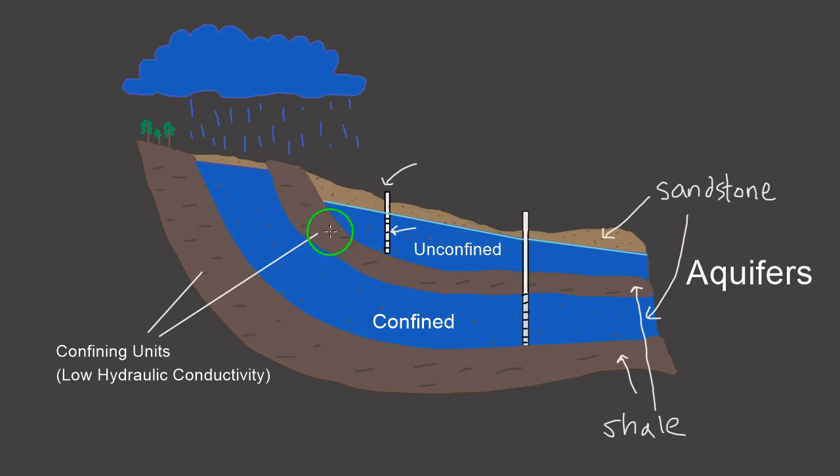So if we stick an instrument down this well and measure the water table right there, that will be exactly where the water level, the water table is in that unconfined aquifer. Pretty straightforward.